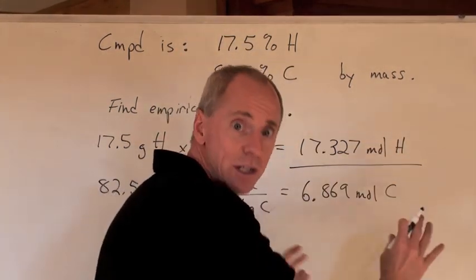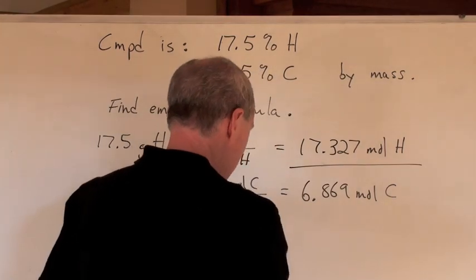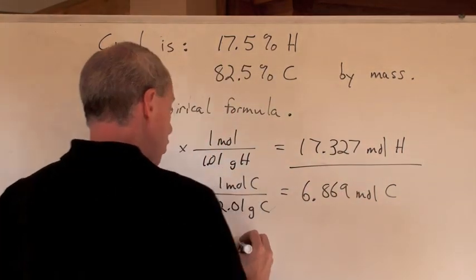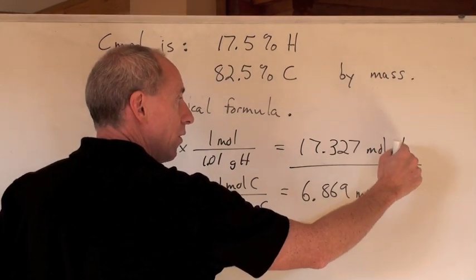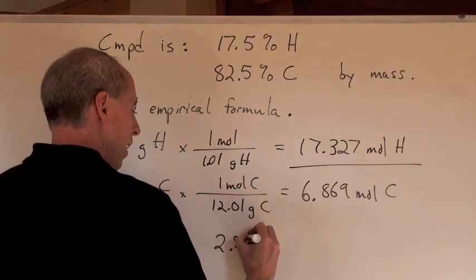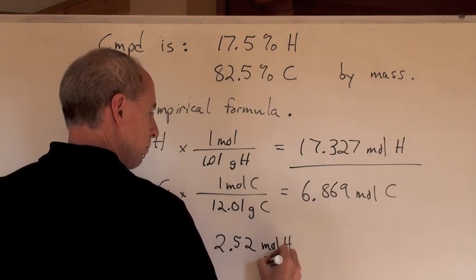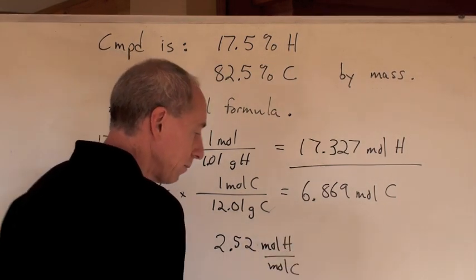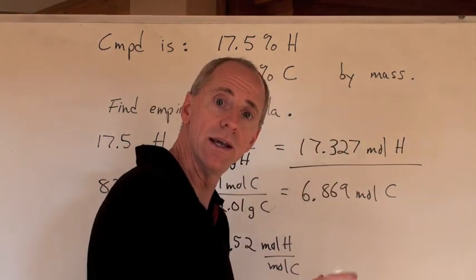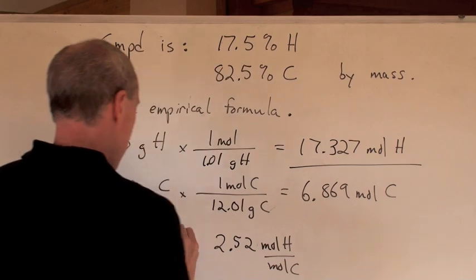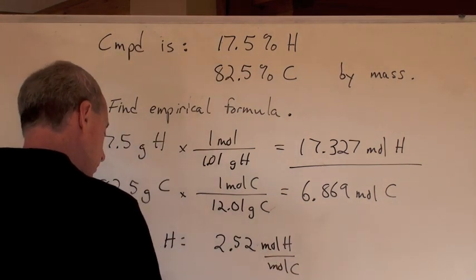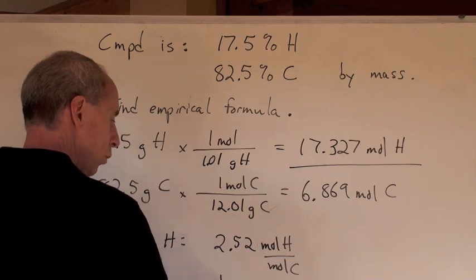But when you divide that number into this number here, do it right here. If your teacher wants you to show all the work, then do that again. Dividing this into this, you get a ratio of moles of hydrogen to moles of carbon of 2.52 moles of H to moles of C.